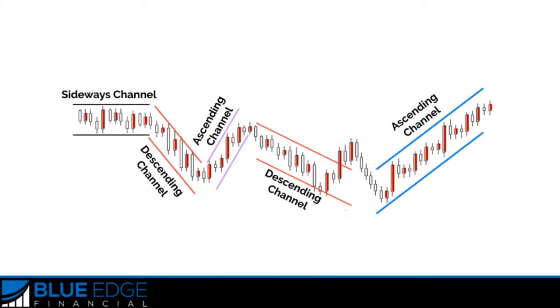We then learned about channels. You just draw the uptrend or downtrend line, and then draw another one at the exact same angle and put it on the other side of the candles. We have the same three types: an ascending channel, a horizontal channel, and a descending channel.